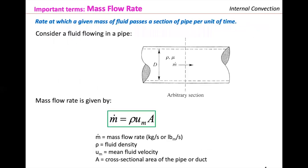We need to revise some important terms from your fluid mechanics course. The mass flow rate is the rate at which a given mass of fluid passes a section of pipe per unit of time. For fluid flowing inside a pipe, it equals the density of the fluid multiplied by the mean velocity multiplied by the cross-sectional area — which for a circular pipe is πD²/4.